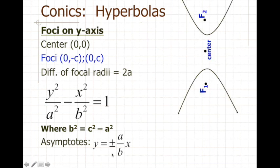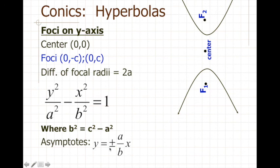If the foci are vertically aligned, only the y and x swap in the equation — a and b stay where they were. The relationship b² = c² − a² remains exactly the same. The asymptote slope is still change in y over change in x, so if you remember it that way you'll get the asymptote right every time regardless of orientation.